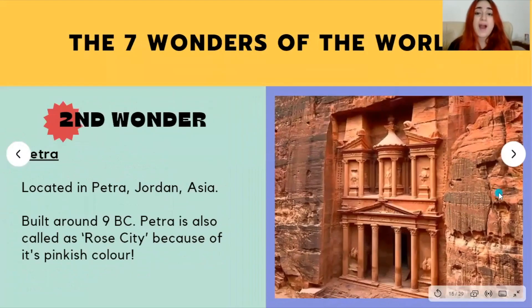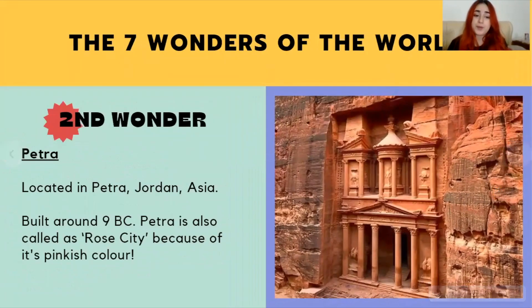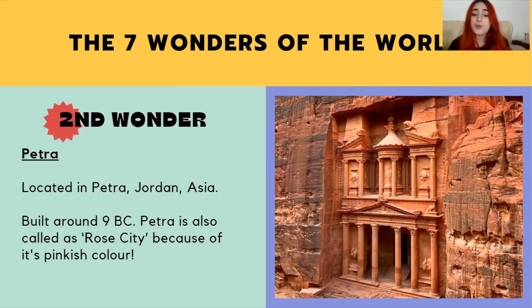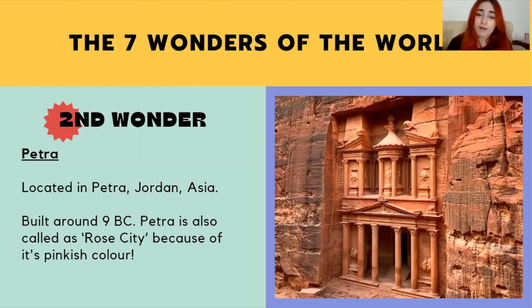Next up, we have the second wonder of the world, Petra. Petra is known for its beautiful architecture and is also known as the Rose City because of its pinkish hue. It is also located in the Asian continent.